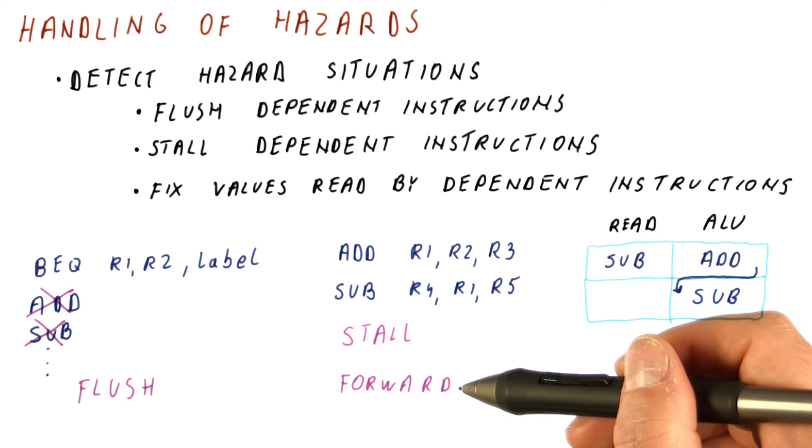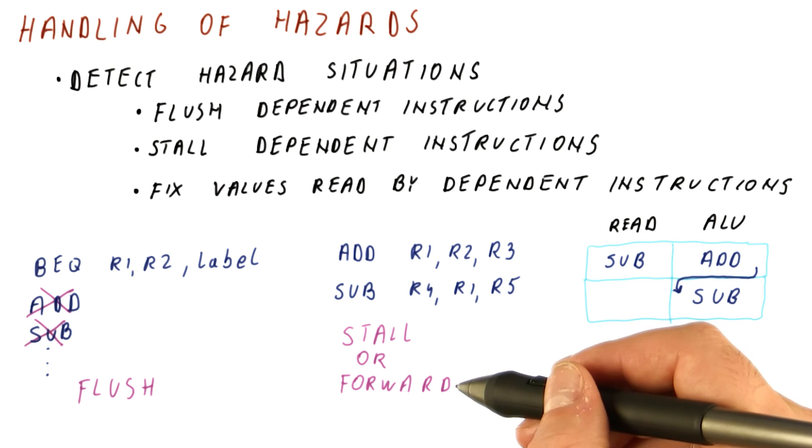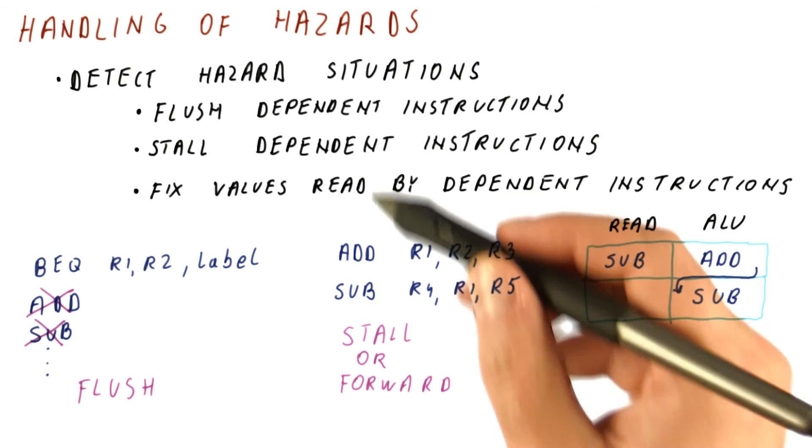Forwarding does not always work. Sometimes the value we need will be produced at a later point in time, so at the time we need it to compute, we still don't even have that value in the pipeline. At that time, we need to stall instead of forwarding.